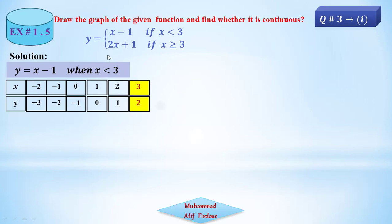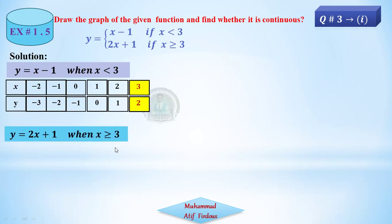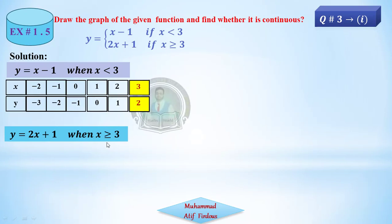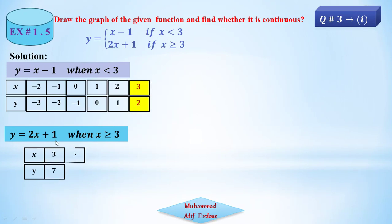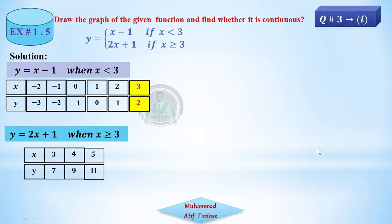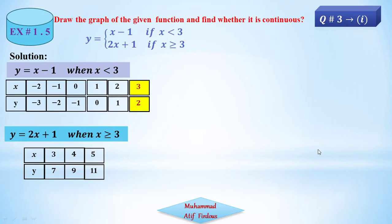This is the other function: y is equal to 2x plus 1, for domain x greater than or equal to 3. The first number we choose is 3. When x equals 3, y equals 2 times 3 plus 1 equals 7. When x equals 4, y equals 9. When x equals 5, y equals 11. Once both tables are formed, we proceed to graph them.